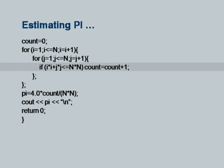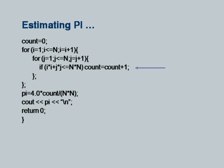Most of the computations happen during evaluation of the if statement. I am multiplying i by itself, j by itself, and n by itself — three multiplications — all inside a nested iteration running n squared times. So these multiplications are carried out n squared times times 3. There is also one addition and one comparison, plus an increment to count when the condition succeeds.